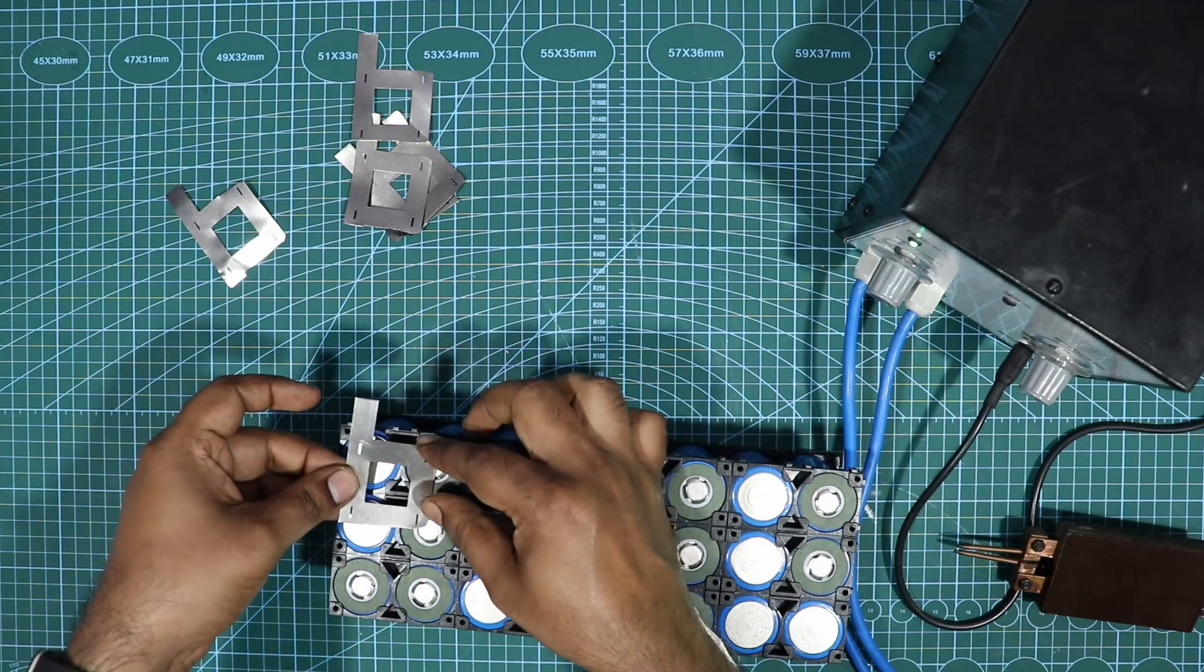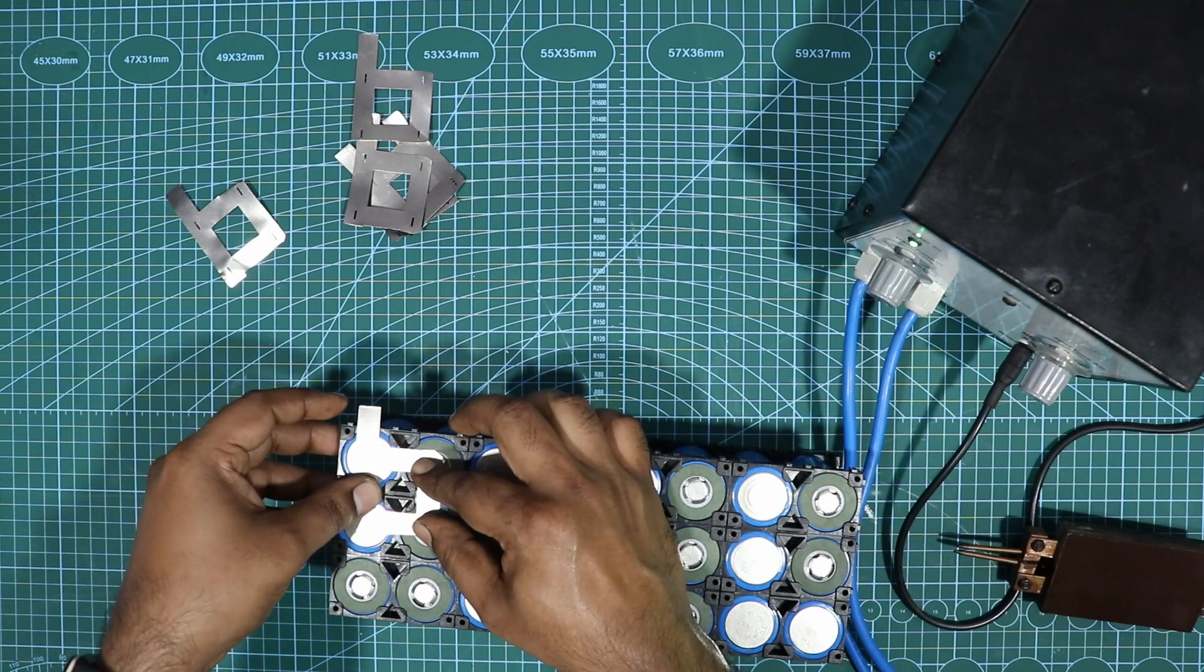The extra nickel strip is to connect balancing lead. That's the reason why I kept some extra wire at the end.